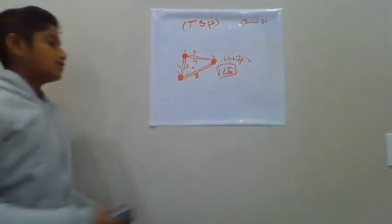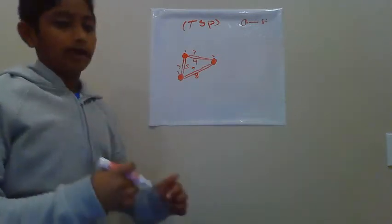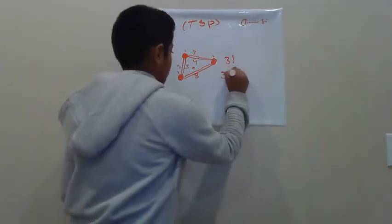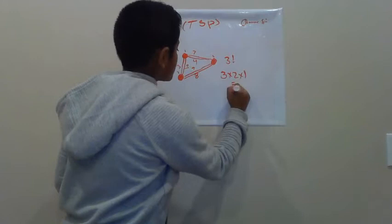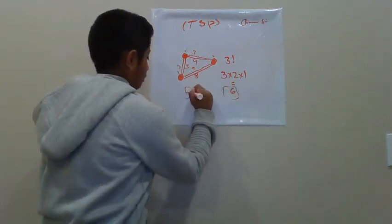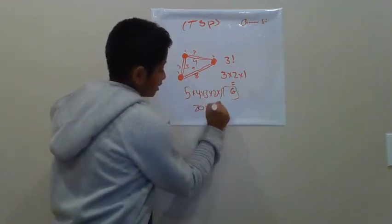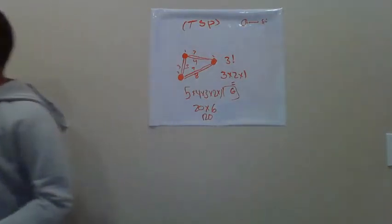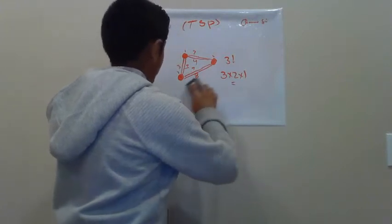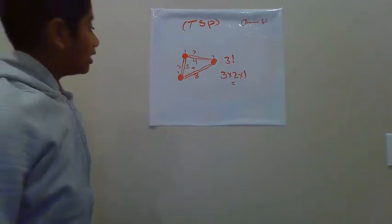One important thing before we start coding: the number of possible paths is the factorial of the number of nodes. With three nodes, it's 3! = 3 × 2 × 1 = 6 paths. With five nodes it's 5! = 120. As we move up to bigger numbers, the number of paths grows enormously — which is why we want to find the most efficient way to solve this.